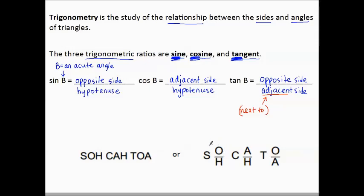Another way to write it, which is a more helpful way: SOH CAH TOA. Because sine is this ratio, cosine is this ratio, tangent is this ratio.